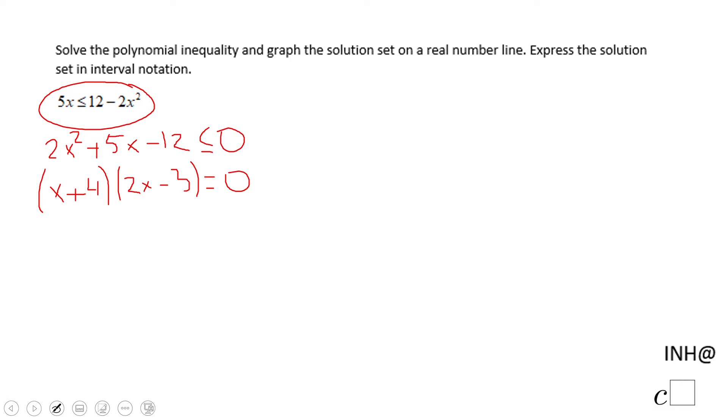Then we're going to use zero product property. x + 4 = 0 will give us x = -4, and 2x - 3 = 0 will give us 2x = 3 and x = 3/2.